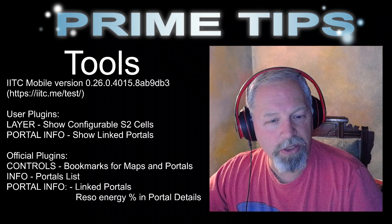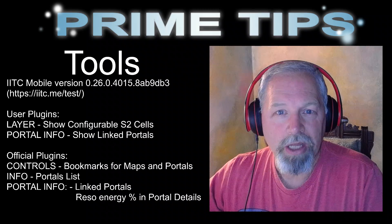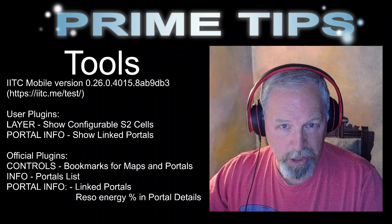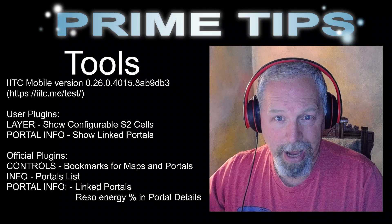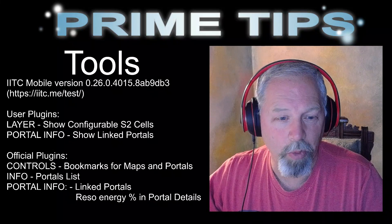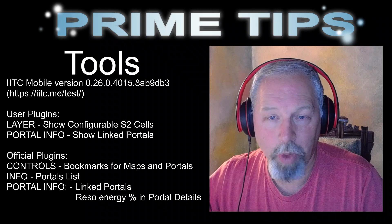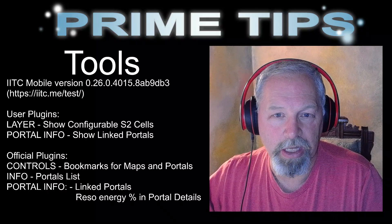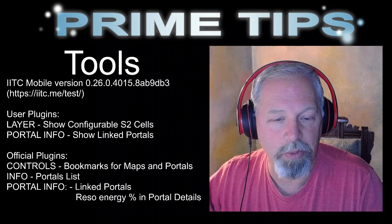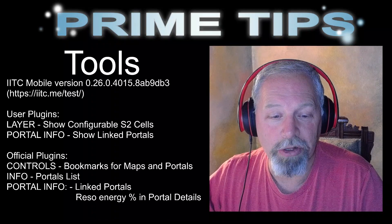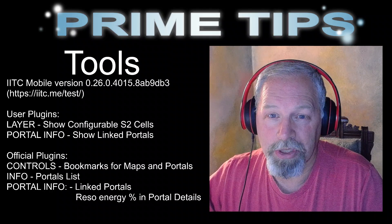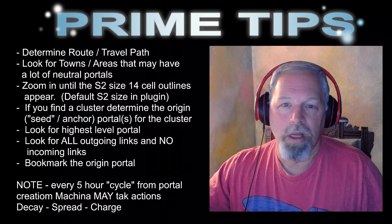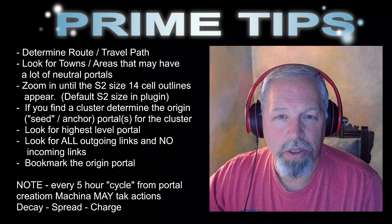Under official plugins and controls, I'd say you want Bookmarks for maps and portals — that way when you find the one portal you want to leave or return to, you can bookmark it. You can also use IITC to get maps directly. Under Info, Portal List lets you look at all of them, so if there are 20 you can pick the high-level one you need to get. Portal Info Linked Portals shows the dotted lines between connected portals. Another important one is Resonator Energy and Percentage in Portal Details — if it's down to five percent that portal is probably on its way out.